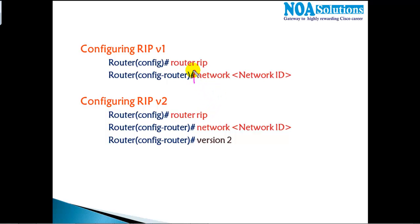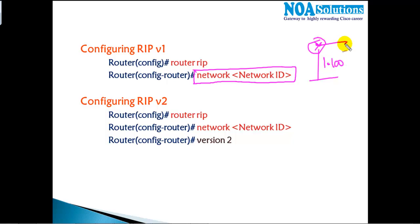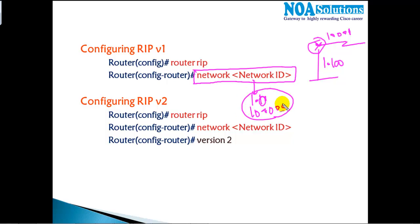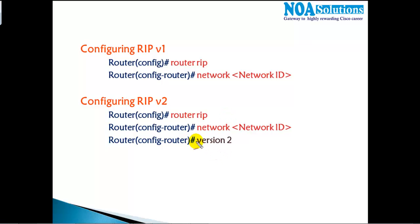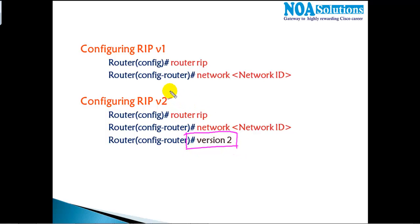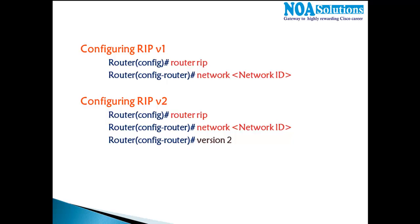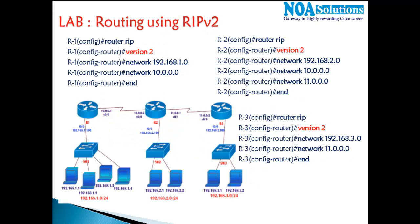Once we define the protocol, we need to advertise our own directly connected interfaces. On Router 1, I have 192.168.1.0 on the LAN interface and a 10.0 network on the WAN interface. We just need to advertise those networks. If you want to use version 2, you must add that command — by default it runs version 1.